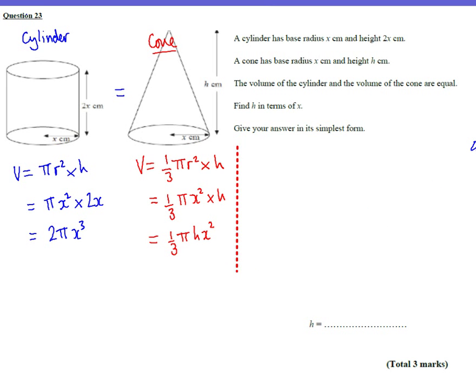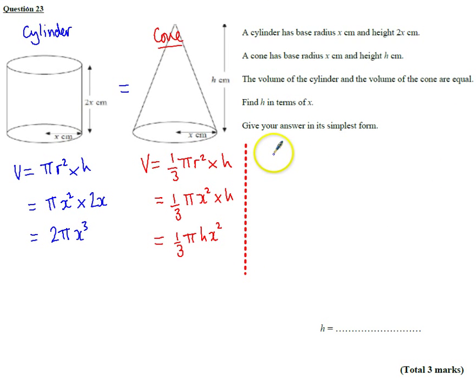And then let's make the volume of the cylinder, which is 2 pi x cubed, equal to the volume of the cone, which is 1 third pi h x squared.